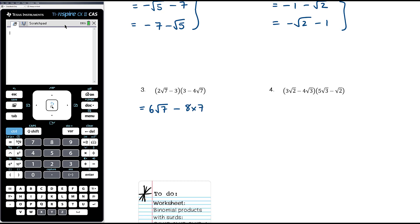Yes, it's root 49, that's 7. Then we've got negative 3 times 3, it's negative 9. And negative 3 times negative 4 root 7, so that's negative 12 root 7.